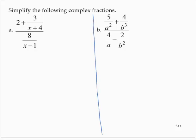So the first thing we have to decide is: what is the LCD? That 2 is a 2 over 1. We have a factor of 1 — that's boring. We have an x plus 4 and an x minus 1. So the LCD for the entire fraction is (x + 4)(x − 1).